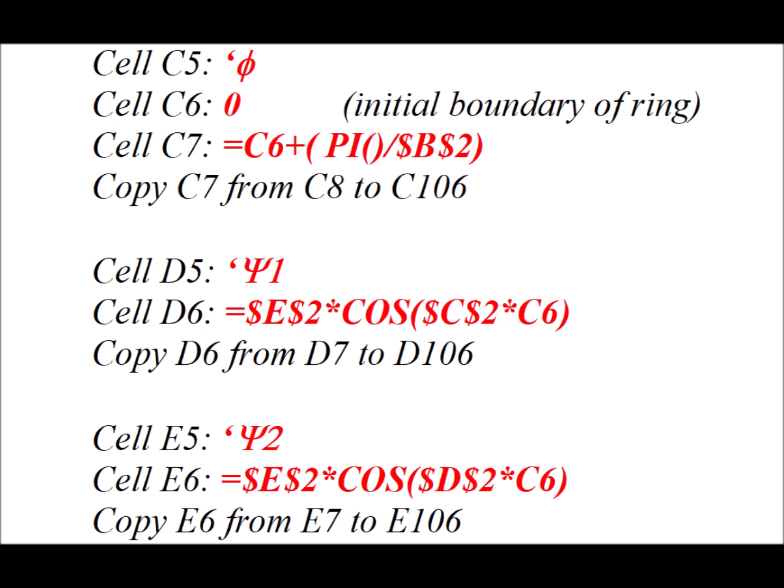In cell E5, we do the same thing, but now for ψ2. In cell E6, we have equals dollar sign E, dollar sign 2. Again, normalization constant. But now we have the cosine dollar sign D, dollar sign 2, which is the second m sub l value. And then we copy the formula in cell E6 from E7 to E106. That will give us the values of the second eigenfunction at any particular angle.